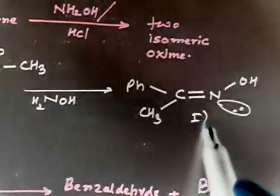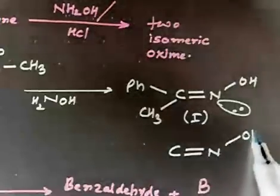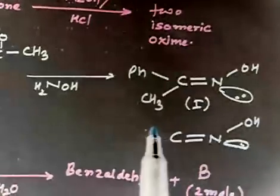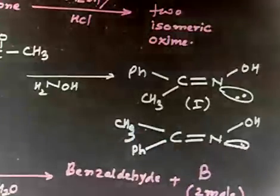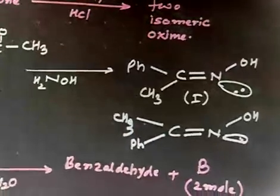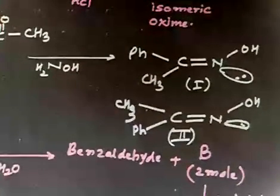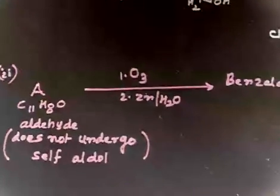In one case you have CH3 and the lone pair on the same side — that is isomer one. In another case you put the CH3 group on the opposite side from the lone pair and the Ph group on the other side — that is isomer two. So acetophenone oxime will exist in two isomeric forms.